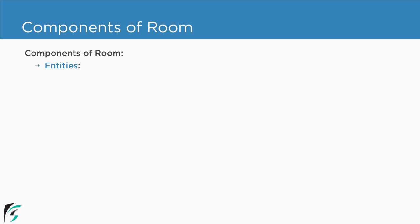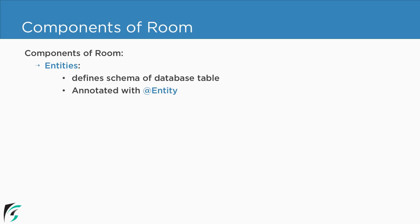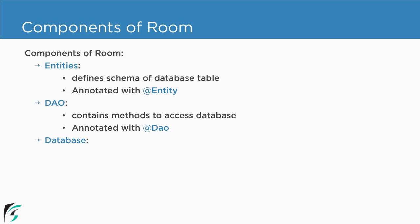The first component is Entity. Entity defines the schema of the database table. Each table is represented by an entity. It has getter and setter functions for fields of the database and it is annotated with the Entity annotation. The second component is DAO, also known as Data Access Object. It contains the methods to access the database — it provides an API for reading and writing data. It is an interface annotated with DAO. The third component for Room is the Database. It is the database holder class and serves as the main access point for the underlying connection of our app's persistent and relational data, and it is annotated with Database.